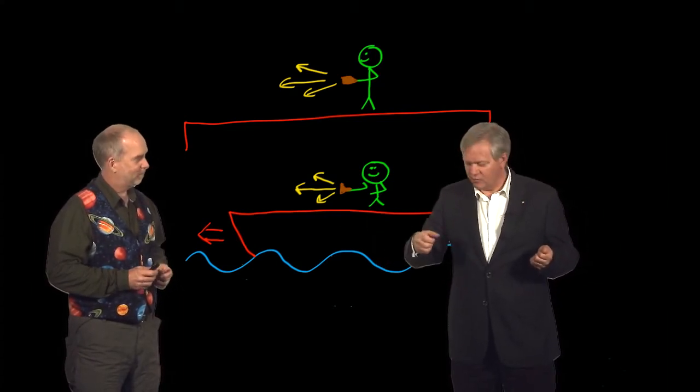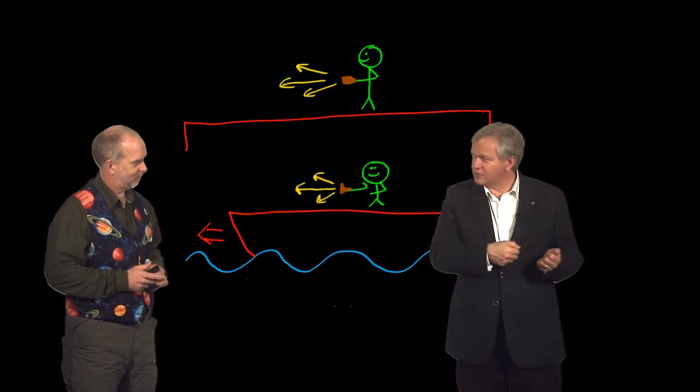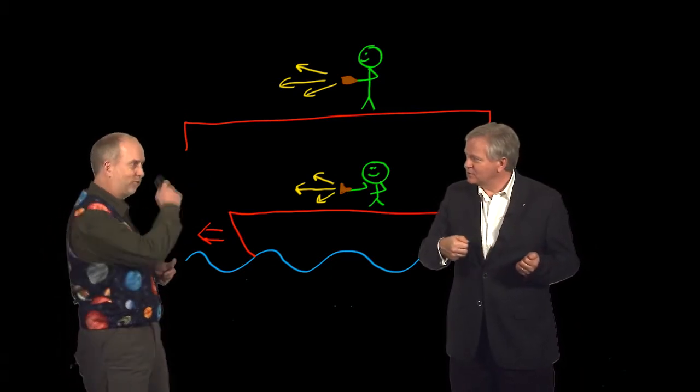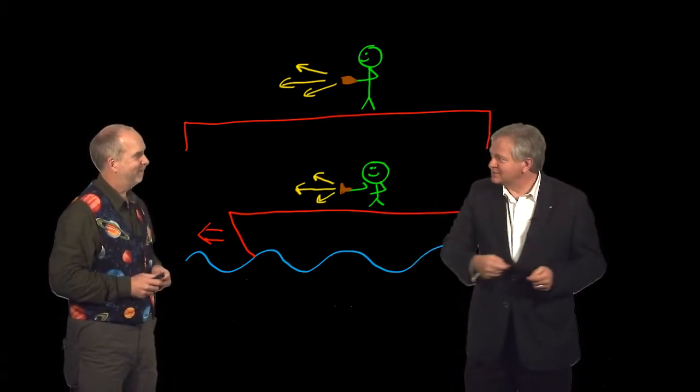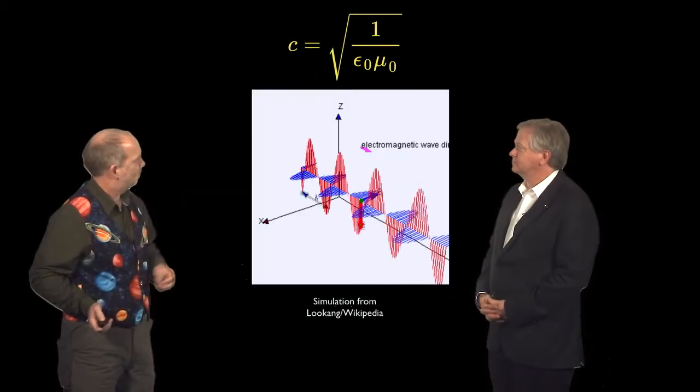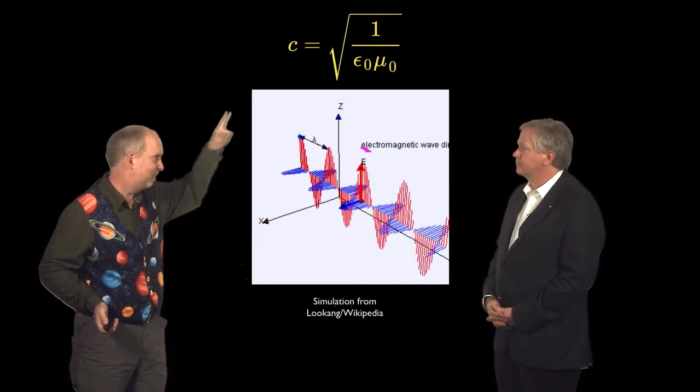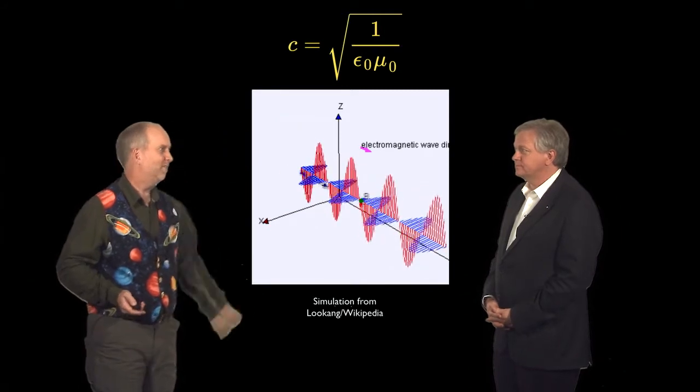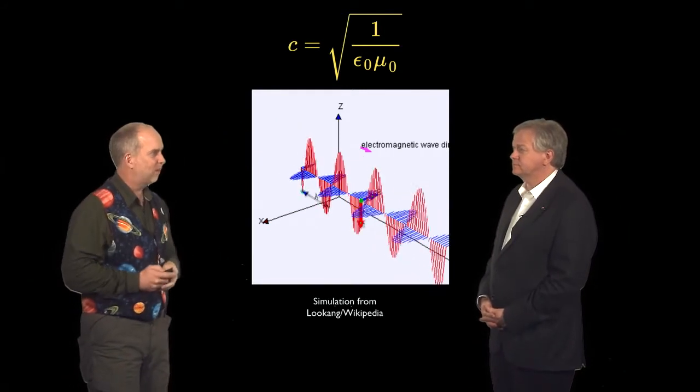And that means that if we shoot our torches off at the same time, mine's going faster than yours. Your light's going to pass my light. Yeah, so that conflicts with this equation we just had back here, which said it was that speed. It didn't say where it was launched from, it just said that speed. So we're now violating Maxwell's equations.